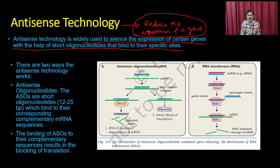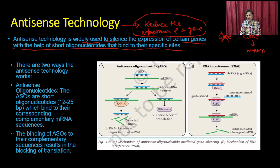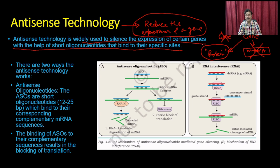If you do not want the expression of a gene, you have two approaches. You can either remove the gene from the genome, or you can devise a mechanism so that the messenger RNA is degraded. In either case, the gene will not be able to produce protein, giving you the same phenotype as when the protein is inhibited or removed from circulation.